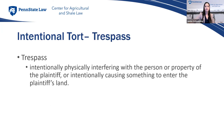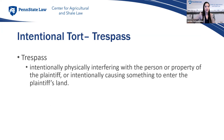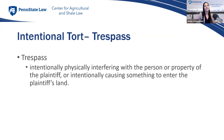Trespass is the intentional physical interference with a person or property, or intentionally causing something to enter the plaintiff's land. Anyone owning large acreage will experience trespass — even drones flying over your property can constitute trespass, invasion of privacy, and nuisance. If someone sneaks onto your property at night, that's obvious trespass. But even a ticket-holding customer who walks past a 'Do Not Enter' sign is trespassing, even though they have a ticket.